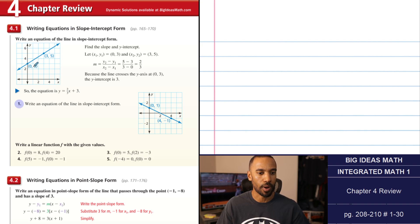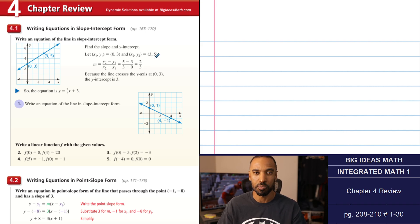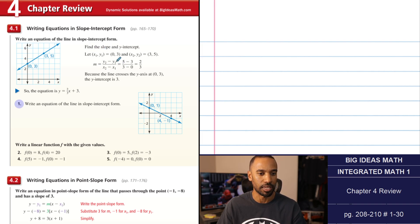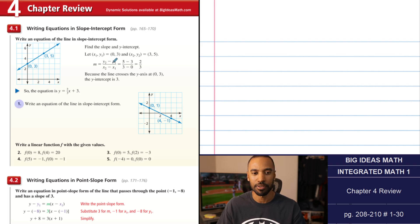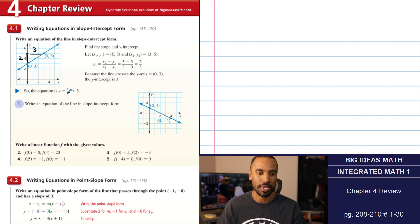Because it crosses the y-axis at (0, 3), the y-intercept is 3. Because they have a graph, I'm going to count the rise and run. You rise 2 and run 3 — that is a slope of 2/3. So in slope-intercept form y = mx + b, this is y = (2/3)x + 3. That is their final answer.